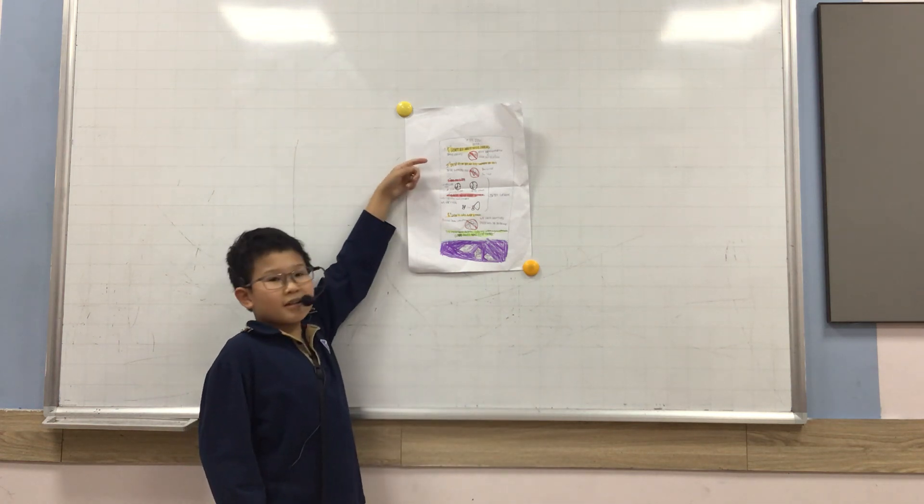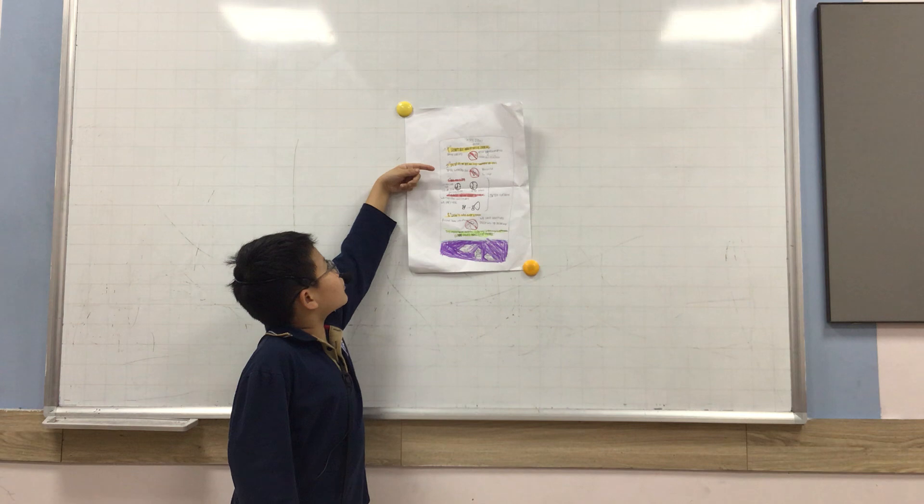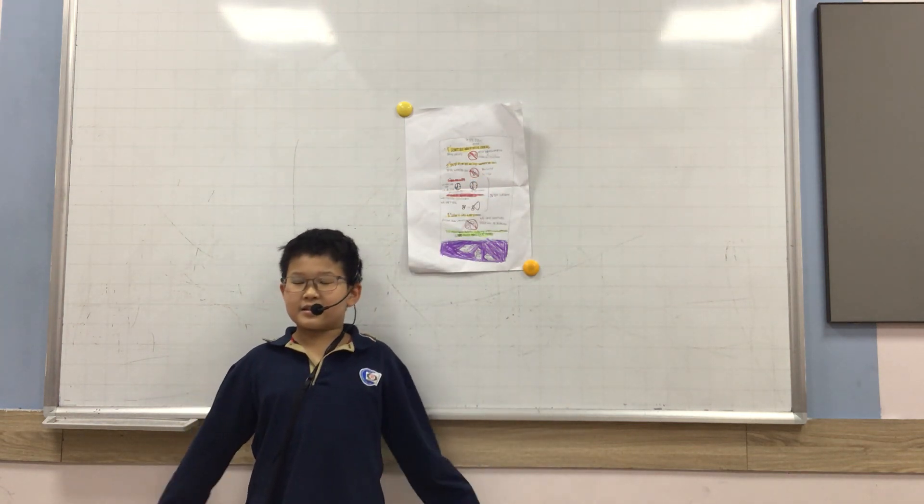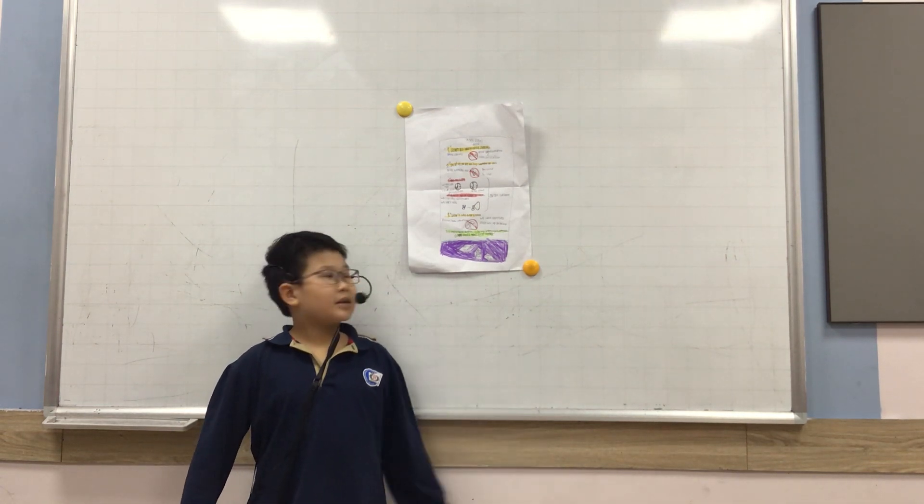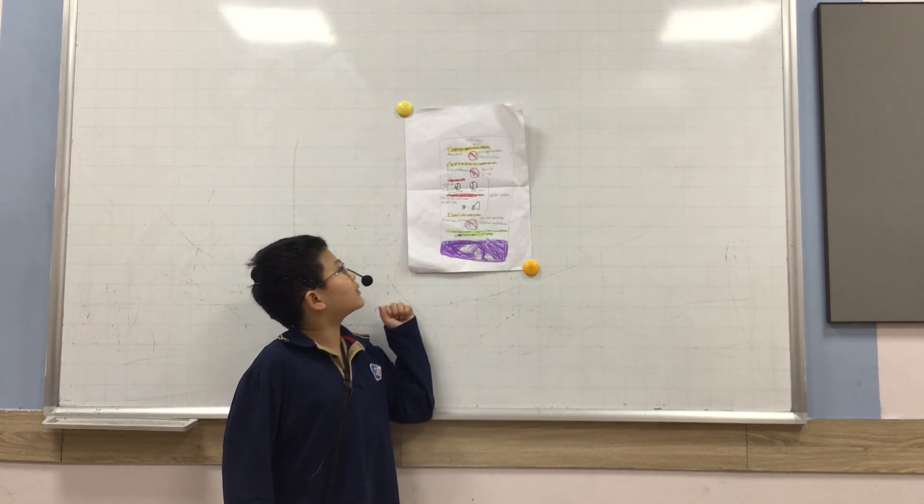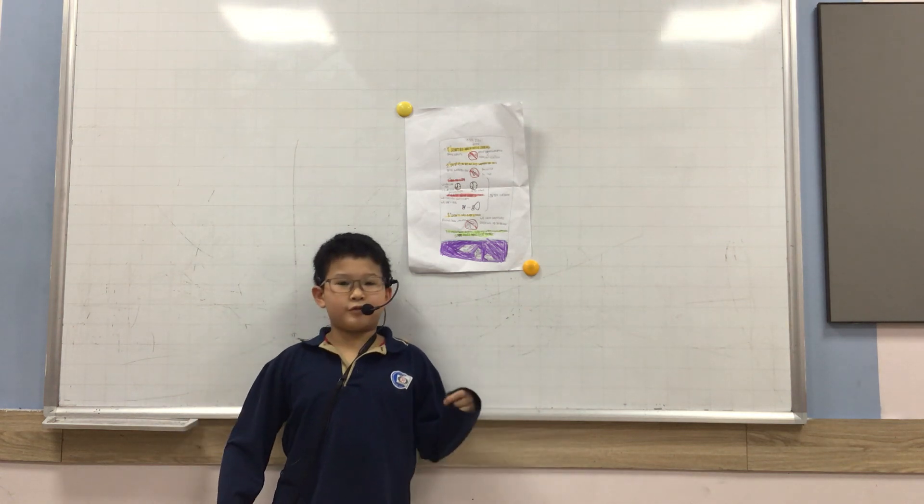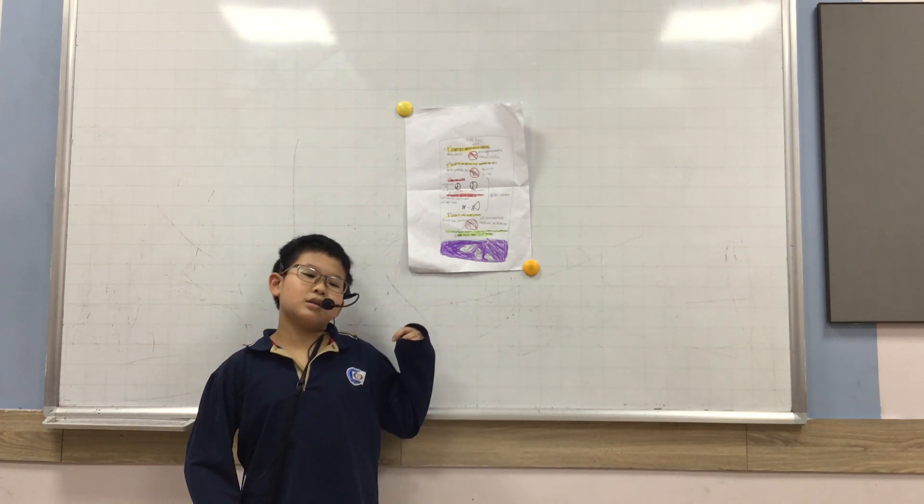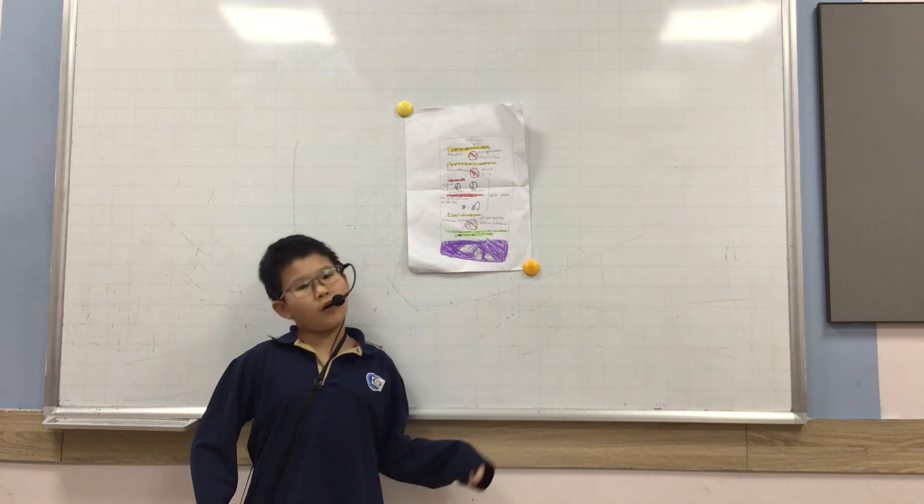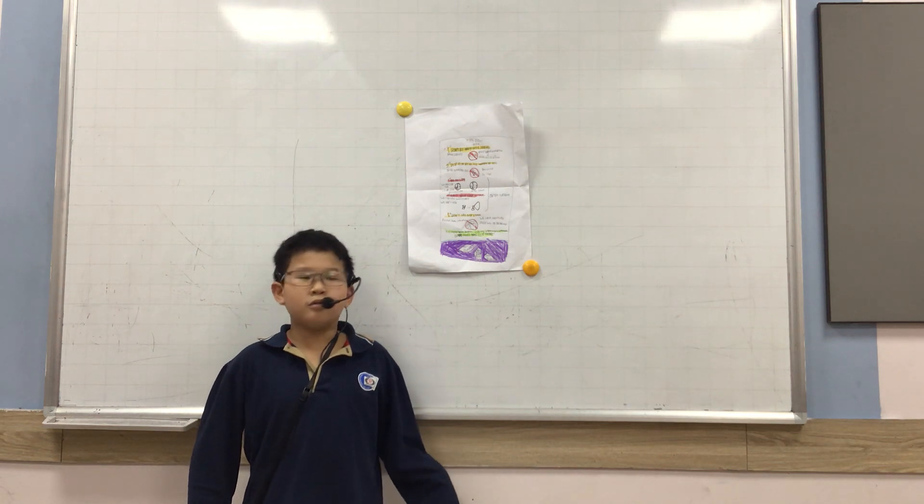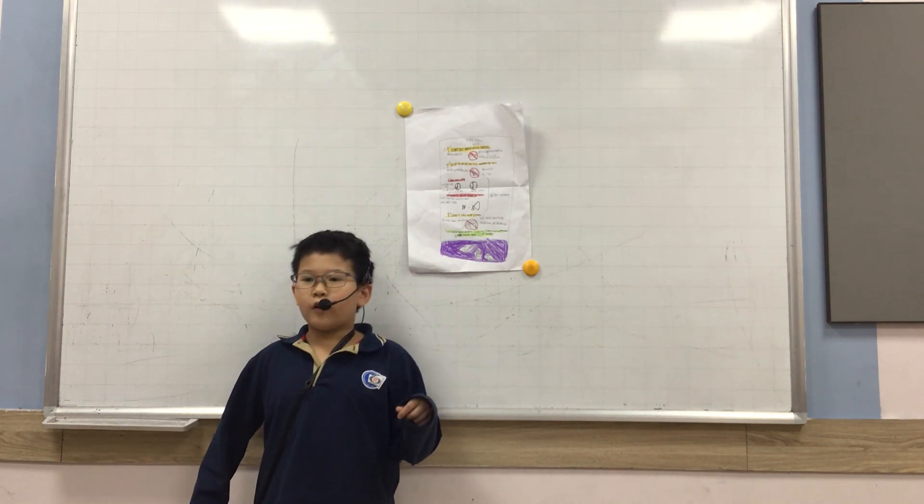My second room is don't run near the swimming pool. I usually see this room at the swimming pool. We have to follow this room because you can fall. If we break the room, you will fall.